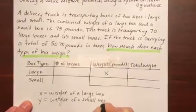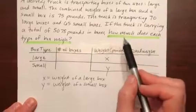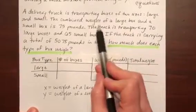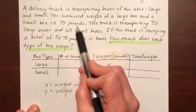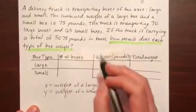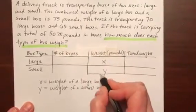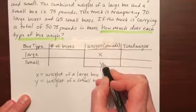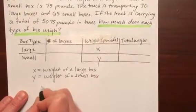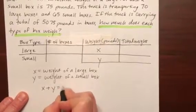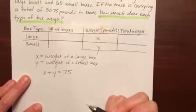That's what we will be solving for, the x and the y. Next we know that the combined weight of a large box and a small box is 75 pounds. So that means if we put this weight of x and this weight of y together we would have 75 pounds. So that's giving us an equation x plus y equals 75. So that will be our first of two equations.